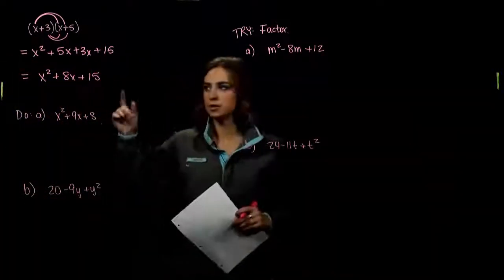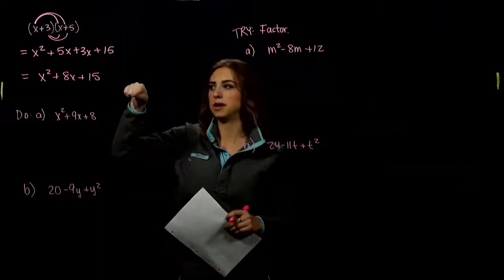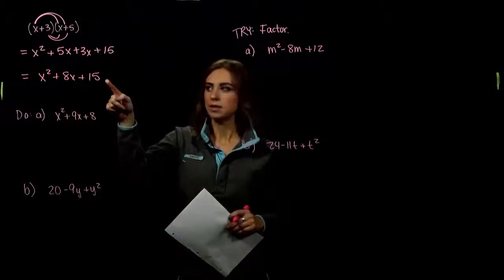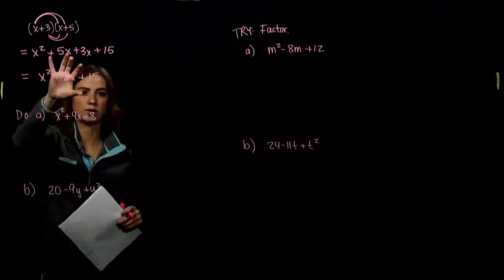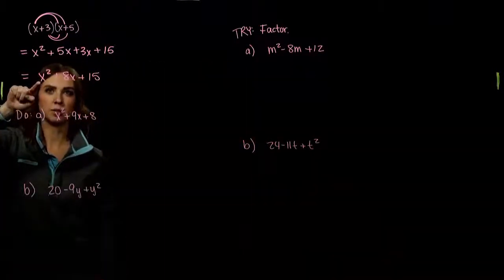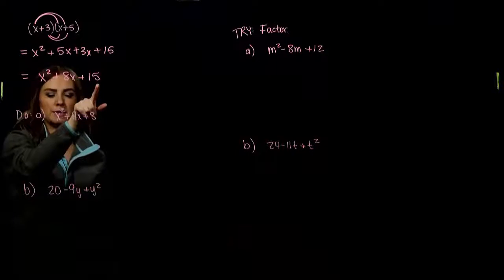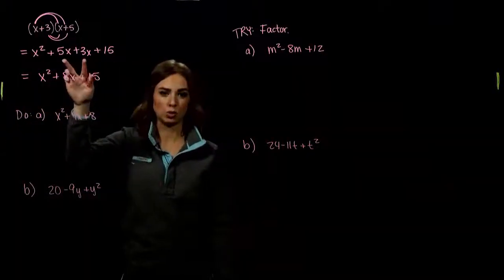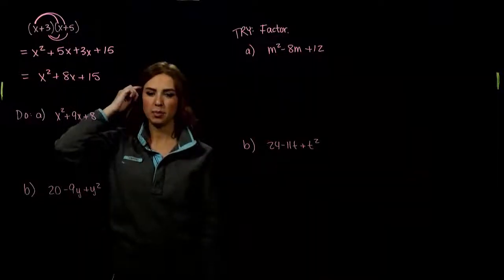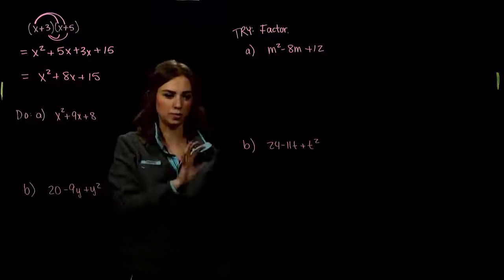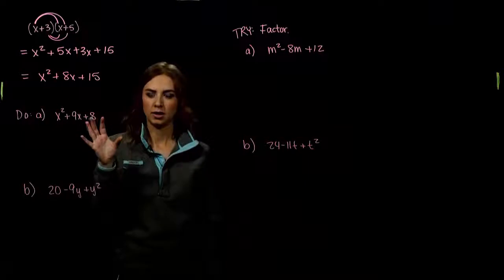Factoring these trinomials is just doing the opposite — going from the bottom to the top instead of from the top down. We want to take a trinomial and rewrite it as multiplication. How did we get to this trinomial? The first term came from the first two being multiplied together, the last term from the last two, and the middle term was the sum of those other two factors.